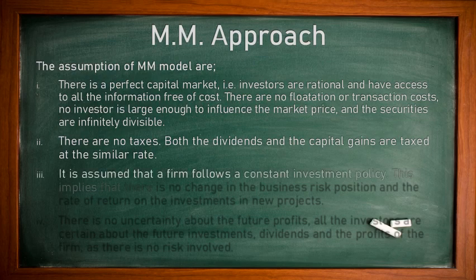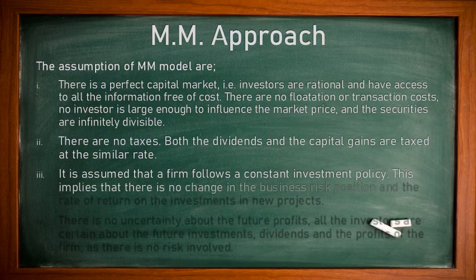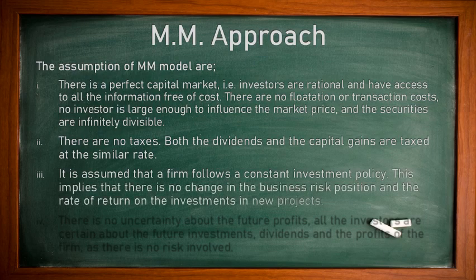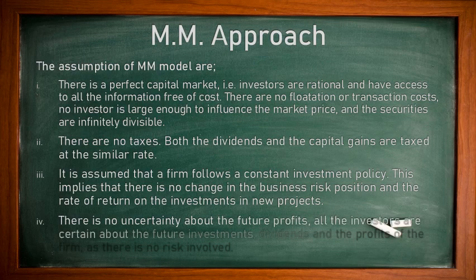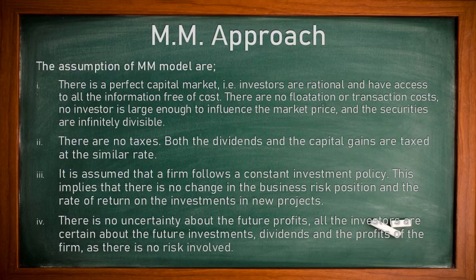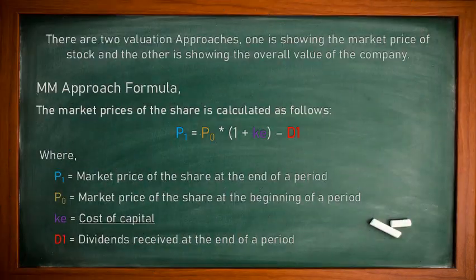Number three: it is assumed that the firm follows a constant investment policy. This implies there is no change in the business risk position and the rate of return on investment in new projects. Number four: there is no uncertainty about future profit. All investors are certain about future investment, dividends, and profits of the firm — there is no risk involved.